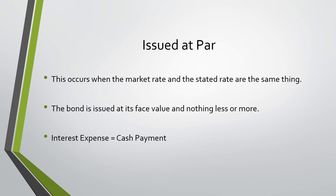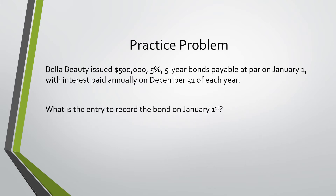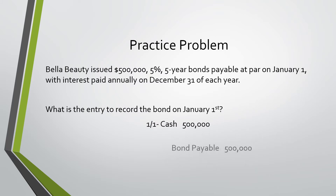Interest expense equals the cash payment. In this practice problem, Bella Beauty issued a $500,000, 5%, five-year bonds payable at par on January 1st, with interest payable annually on December 31st of each year. What is the entry to record the bond on January 1st? To record the initial bond, we would debit cash for $500,000 because that is how much we are receiving, and credit bonds payable for $500,000 — that's how much we will eventually pay them back.